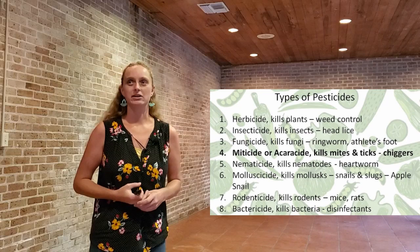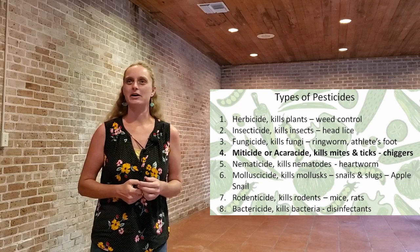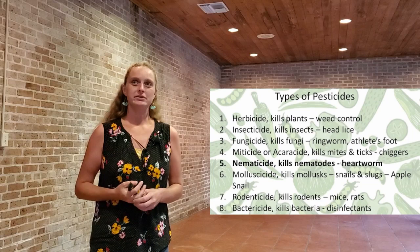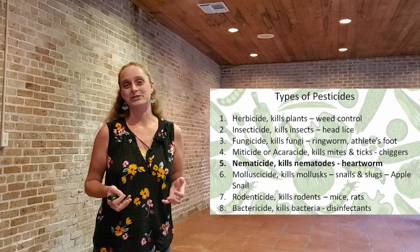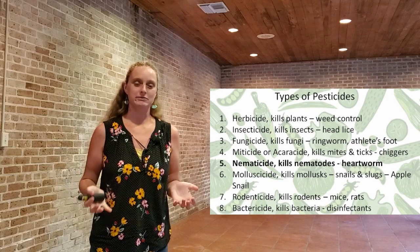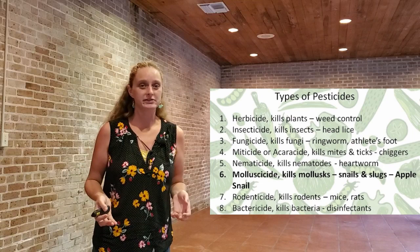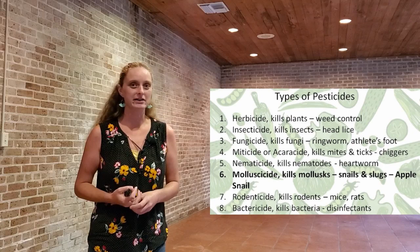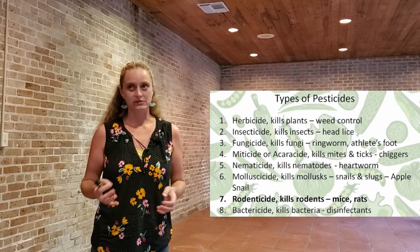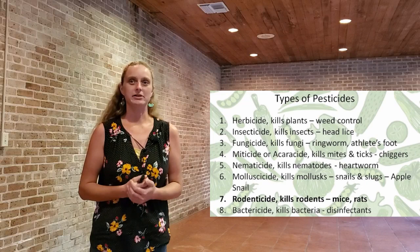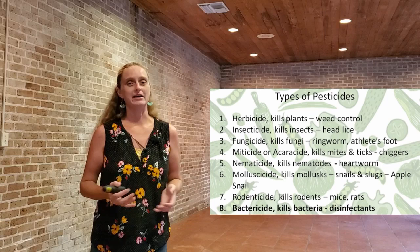Miticides or arachicides kill mites and ticks. In humans, we sometimes get chiggers in the south, so that's a mite or arachicide application. Nematicides kill nematodes — heartworms in your dog are actually a nematode or a worm, and they would use that kind of product. Molluscicides kill mollusks, so snails and slugs in your garden. Here in south Louisiana we have an invasive species called apple snail that we'd use those products on. Rodenticides kill rodents — mice and rats. And a bactericide kills bacteria, like a disinfectant for your countertop.